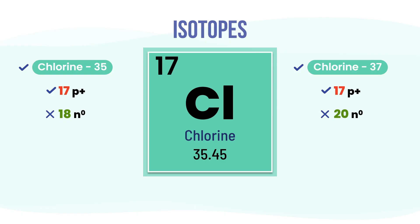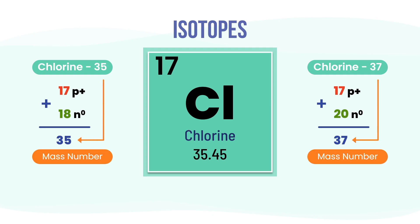Now that we know about isotopes, let's talk about something called the mass number. The total number of protons plus neutrons gives us the mass number of each isotope. So chlorine-35 has a mass number of 35, and chlorine-37 has a mass number of 37.